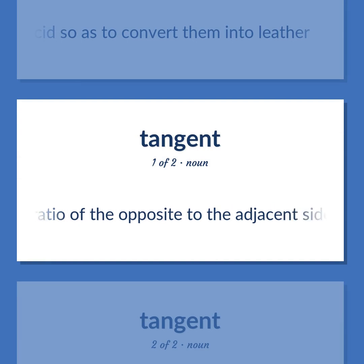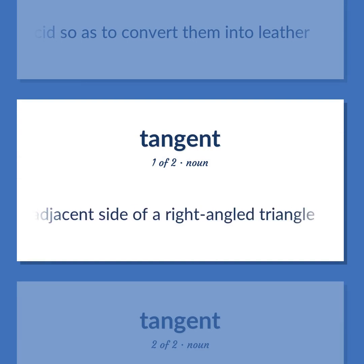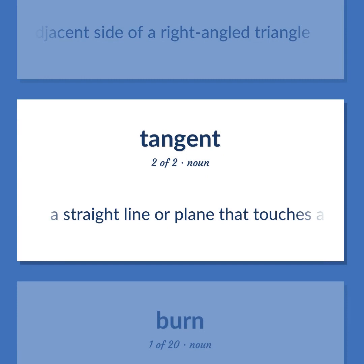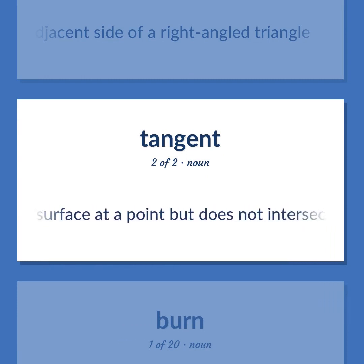Tangent: Ratio of the opposite to the adjacent side of a right-angled triangle. Also, a straight line or plane that touches a curve or curved surface at a point but does not intersect it at that point.